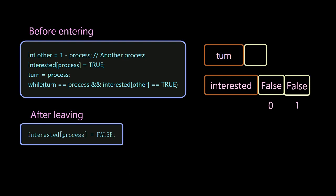If there are two processes, numbered 0 and 1, enter at the same time. For process 0, the other is 1. Then in the next line, set the 0 bit of the interested array to true.